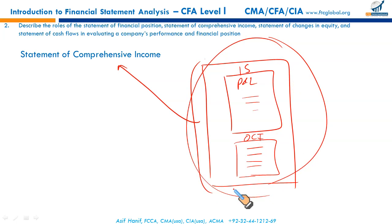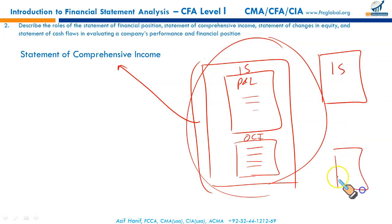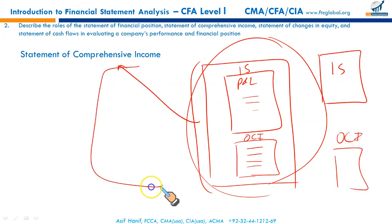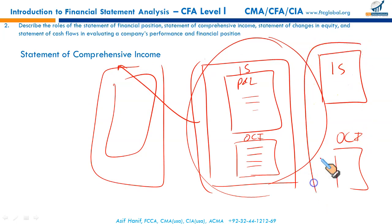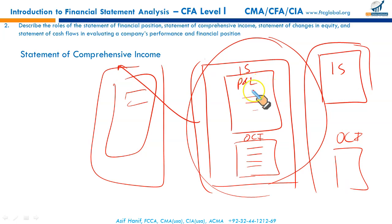There are two allowed alternative methods of reporting other comprehensive income. Either you prepare two separate statements — one is the income statement, the other is the OCI statement — or you show them joined in a single continuous statement. But they must always be together; you cannot put the income statement separately and OCI only in the notes. The statement of comprehensive income is the sum of your income statement and other comprehensive income.